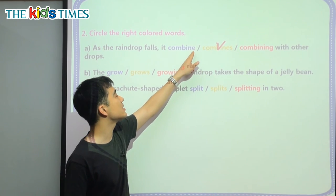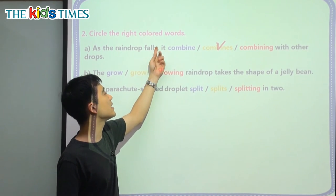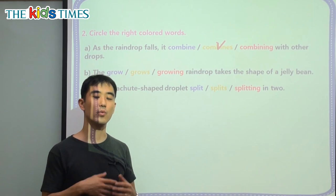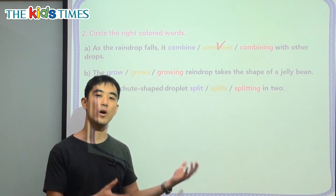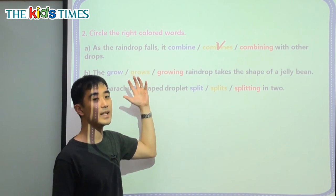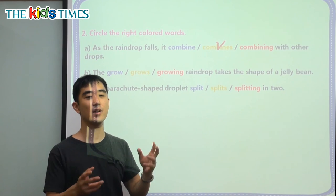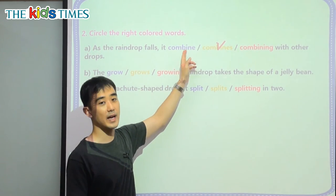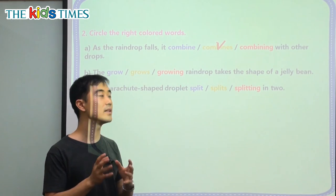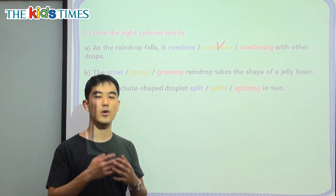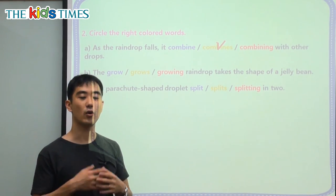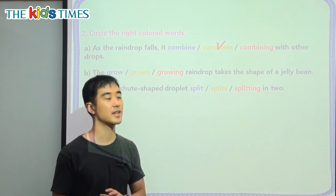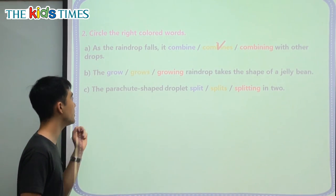If there is no S, then that means it's going to be 'you.' So: you walk, we walk, or they walk. When there are many subjects, or 'you' and 'I,' then we don't put an S. But if it's one subject — like 'it,' 'he,' or 'she' — then we have to put the S at the end of the verb.